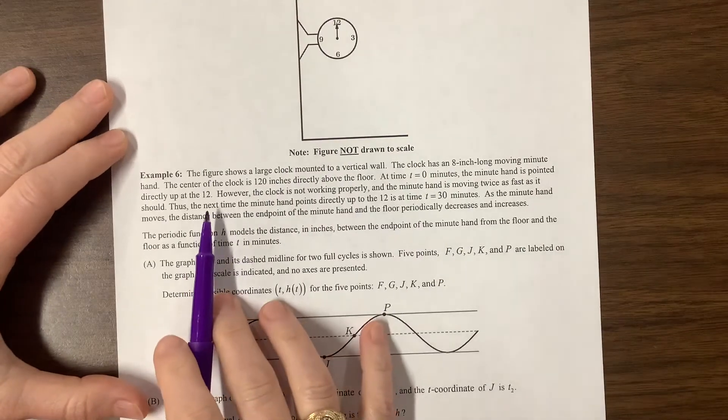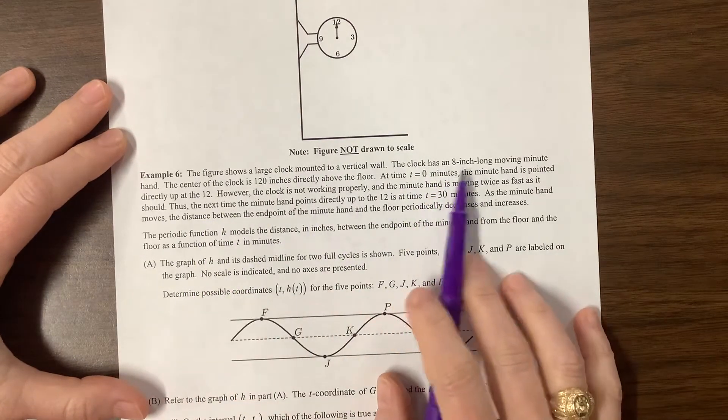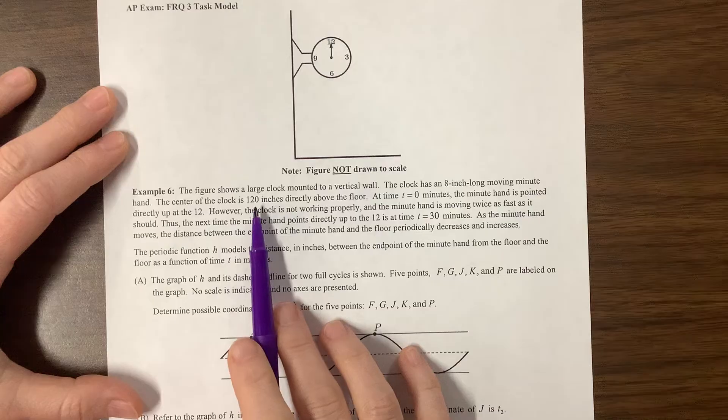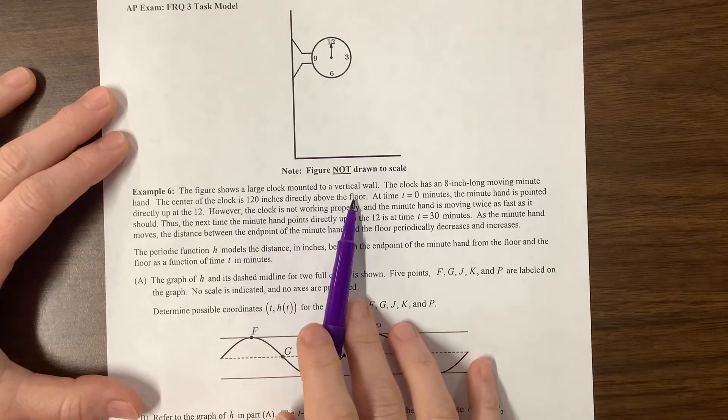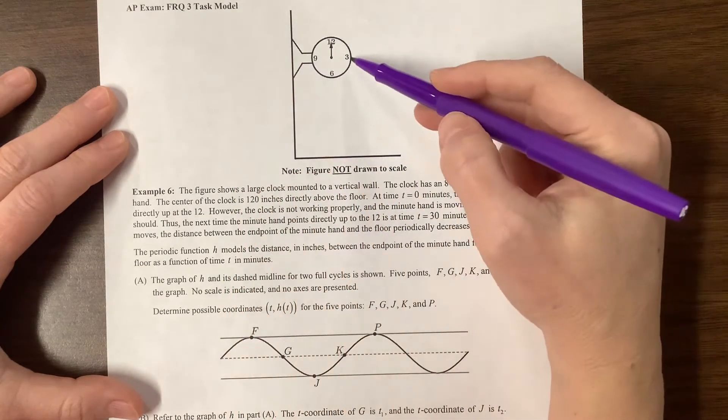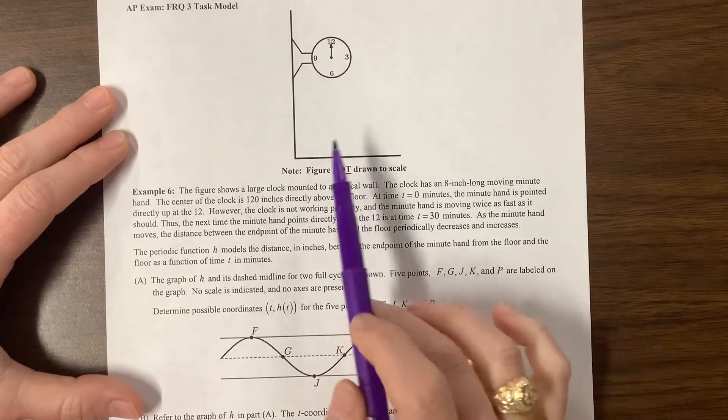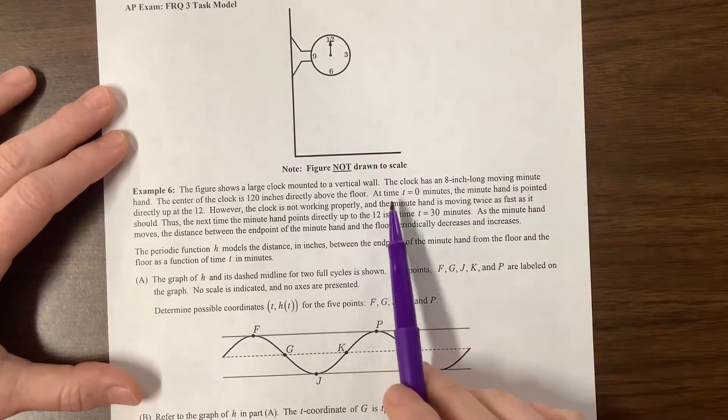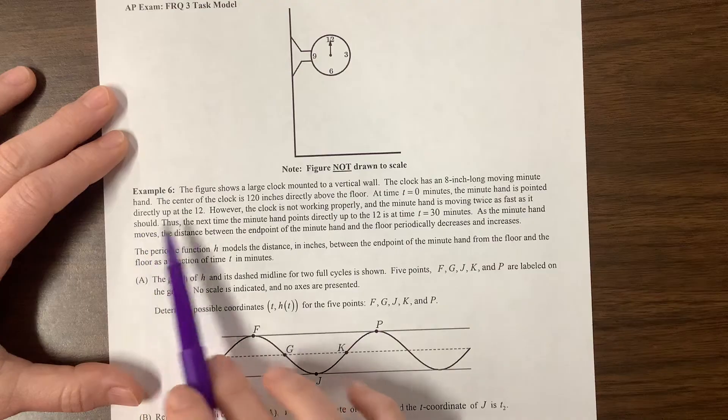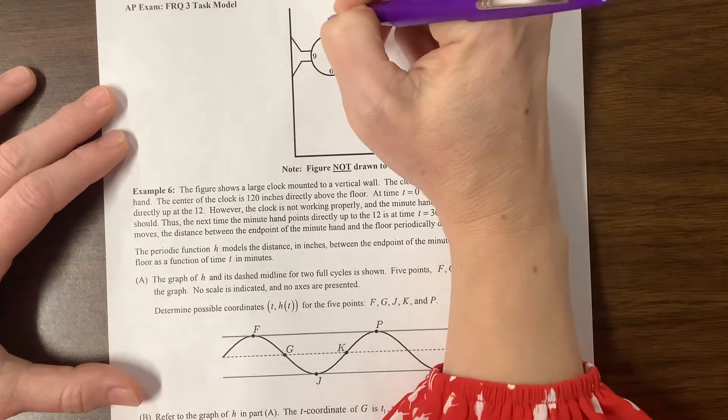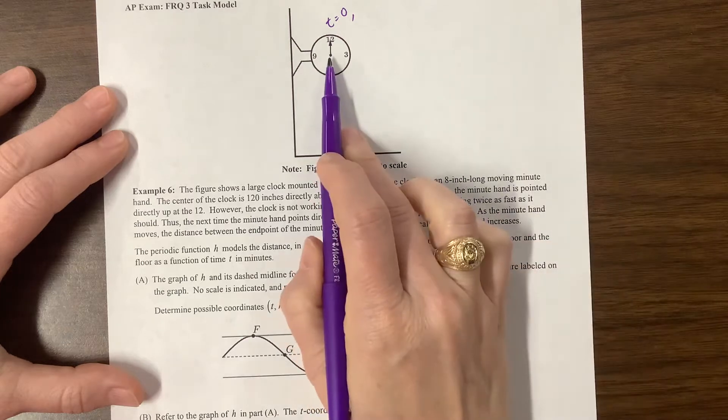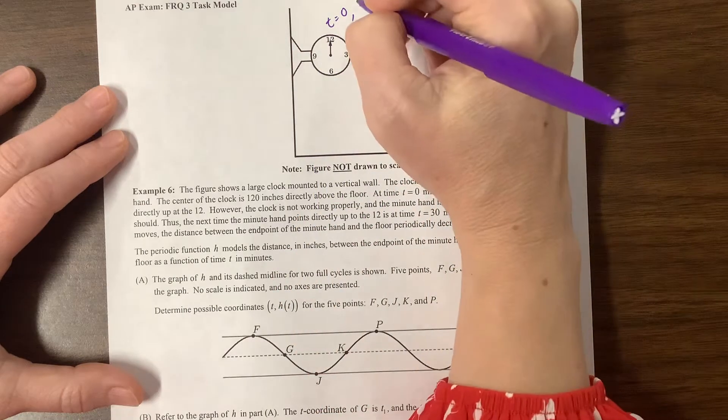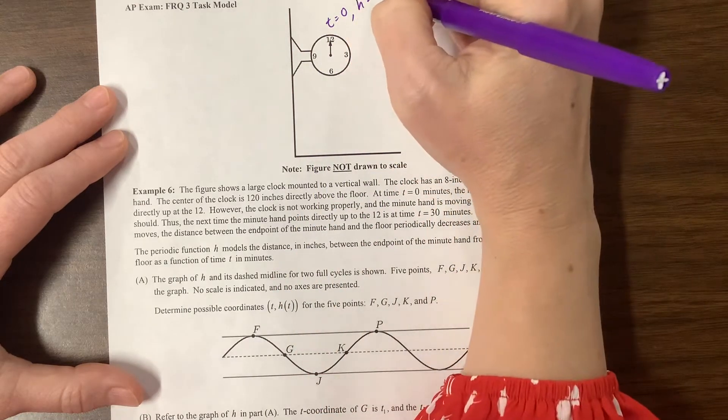So they're telling us there's a large clock on a wall. The clock has an eight-inch moving minute hand. They've shown us the minute hand right here. The center of the clock is 120 inches directly above the floor. So this height above the floor from here down is 120 inches.